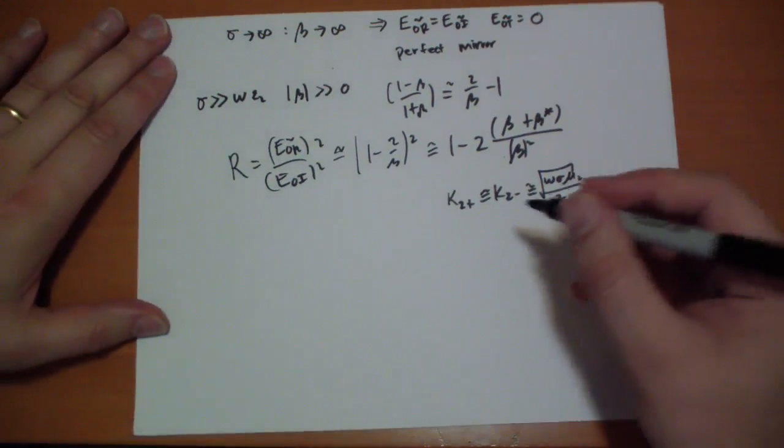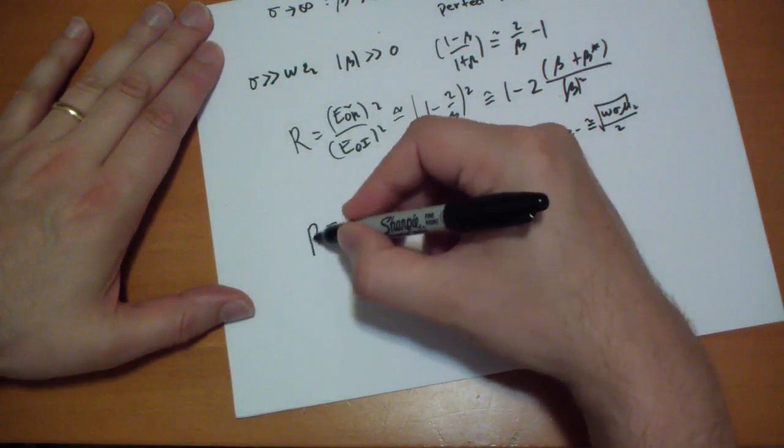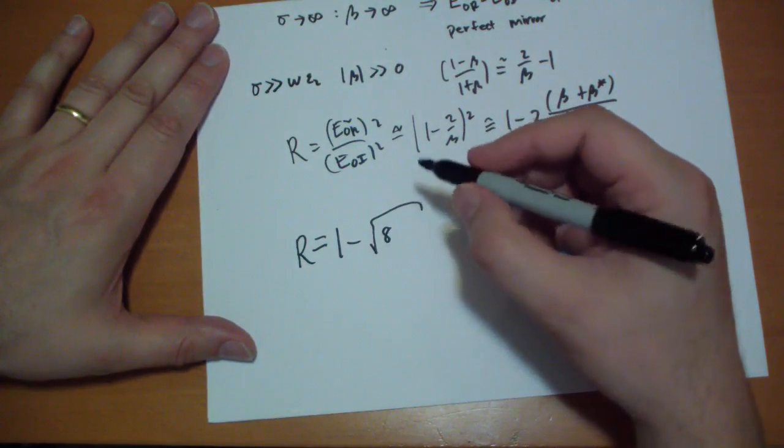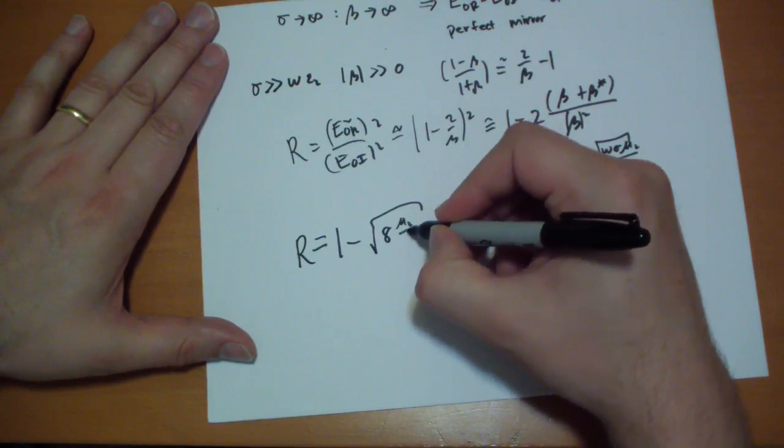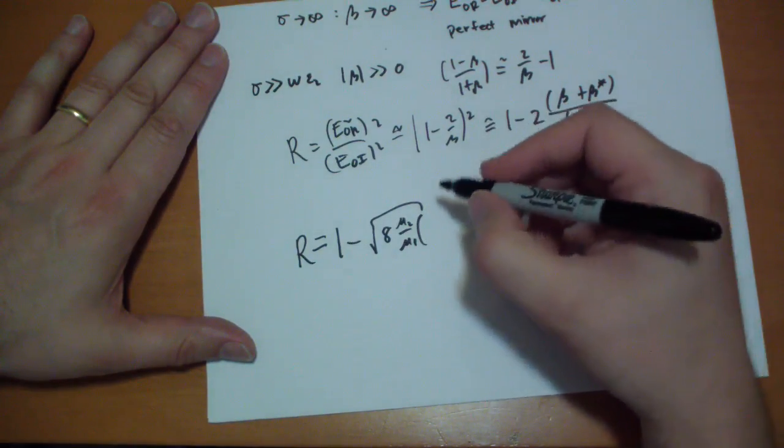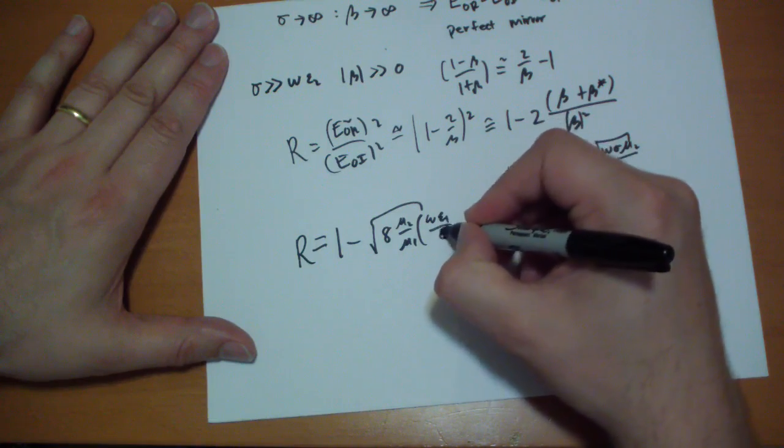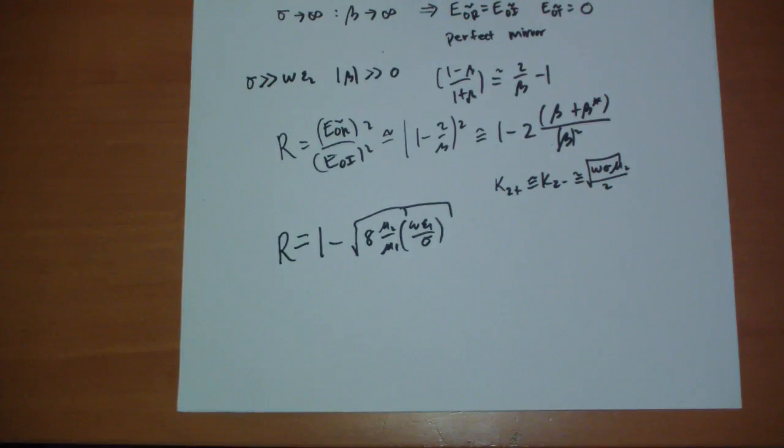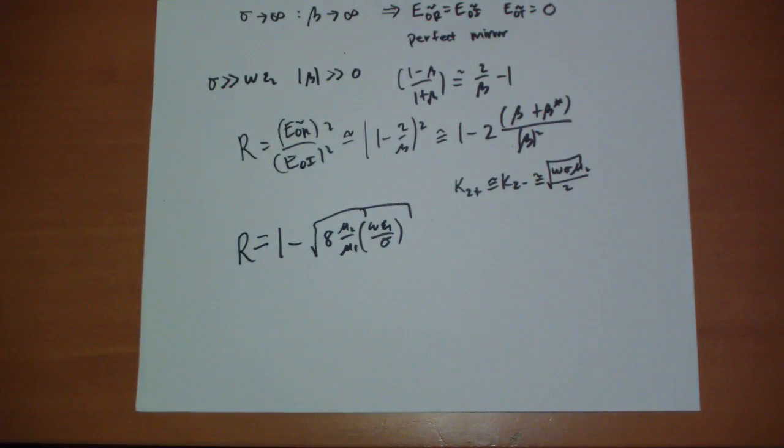And so the r actually reduces down to this simple thing: 1 minus the square root of 8 times mu 2 over mu 1, and then he has omega epsilon 1 divided by sigma. And this is, I know I'm covering a lot of material here. If you have questions you need to go back and review earlier material. I'm sorry, there's no other way to do this. And with that, if you have any questions, leave them in the comments and I hope everything is understandable. Thanks for your time, goodbye.